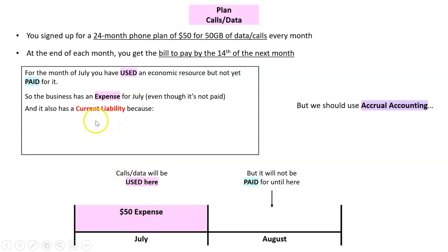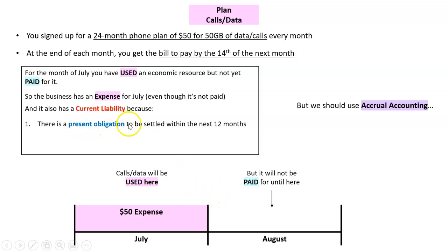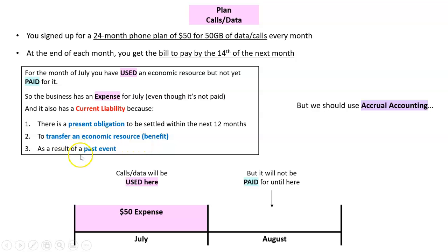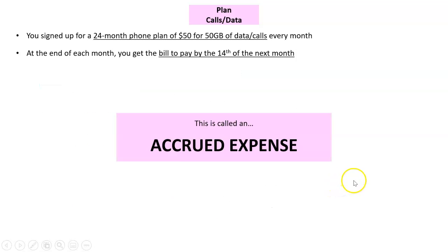We should also recognize that as a current liability. At the end of July, you have a present obligation to pay your phone bill — within the next 12 months, in fact within 14 days. You have an obligation to transfer an economic resource, which in this case is cash. And there was a past event: you signed up for the phone plan and used your data. So we recognize the expense in the month it was actually incurred. That demonstrates what we call an accrued expense.